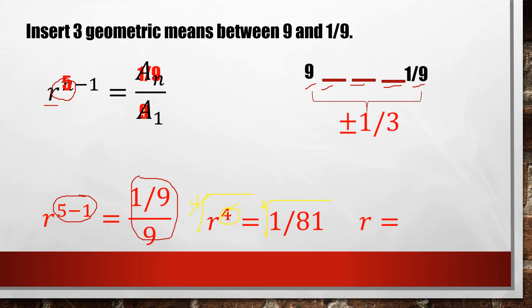First, using the positive common ratio of 1 over 3: 1 over 3 times 9 gives positive 3; times 1 over 3 gives 1; times 1 over 3 gives 1 over 3; and continuing gives 1 over 9, our last term. Now using the negative common ratio of negative 1 over 3: 9 times negative 1 over 3 gives negative 3; negative 3 times negative 1 over 3 gives 1; 1 times negative 1 over 3 gives negative 1 over 3; and negative 1 over 3 times negative 1 over 3 gives positive 1 over 9, arriving at our last term again. So any of these two sets of geometric means are correct answers.